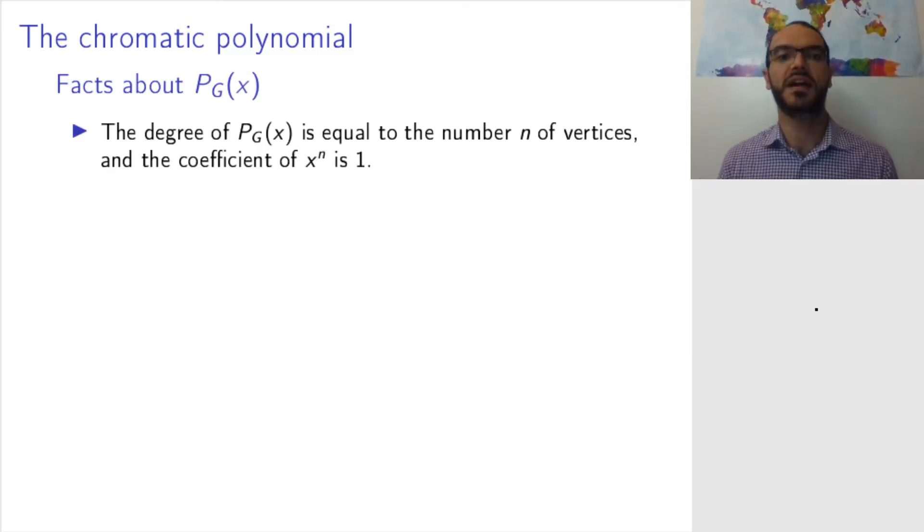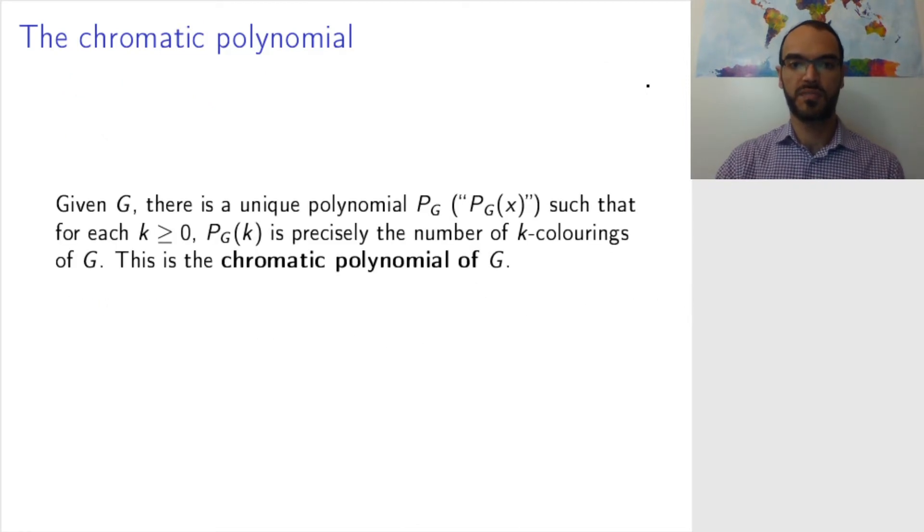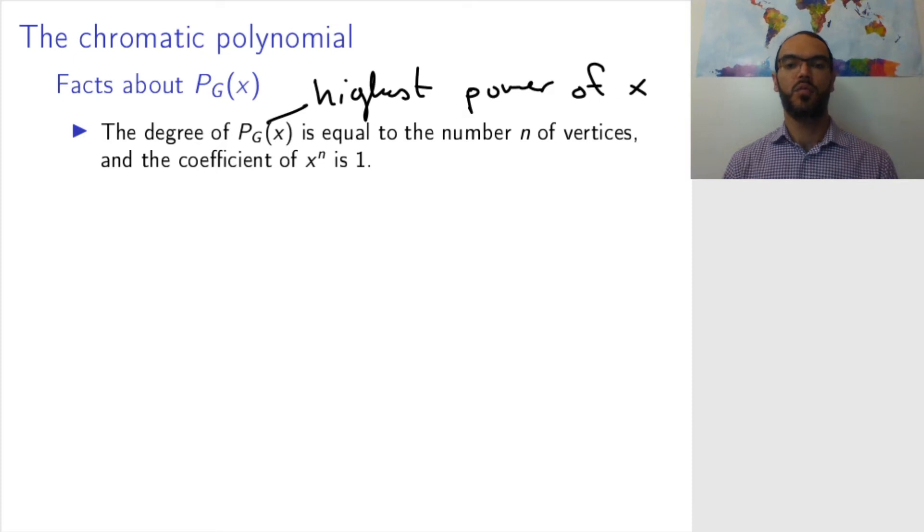So, let's get into some facts about this polynomial P_G of x, and to illustrate how we can use algebra to formulate some of our graph theoretic problems. This polynomial has a degree. Remember, the degree of the polynomial is the highest power of x. And the highest power of x in this polynomial will be the number of vertices in the graph. Remember, for c_4, that has four vertices. This was x to the power of 4. And the coefficient will be 1. Why is that?